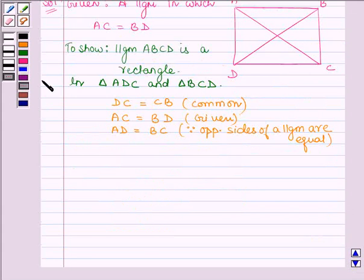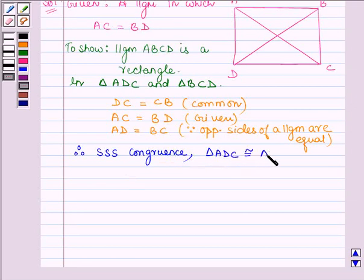Therefore, by SSS congruence, we can say that triangle ADC is congruent to triangle BCD.